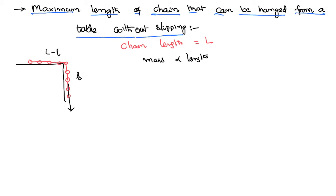The mass of the hanging chain is: total mass by total length — which is the mass per unit length — multiplied by the hanging length. So the hanging portion of length small L has mass equal to (M/L) × l, and hence the total downward force is (M/L) × l × g, where capital L is the total length and small l is the length of the chain hanging.